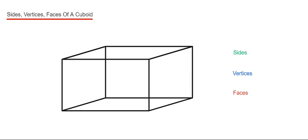Let's start with the number of sides first of all. The number of sides are the lines which make the shape. So we've got 1, 2, 3, 4, 5, 6, 7, 8, 9, 10, 11, 12. There we have 12 sides.